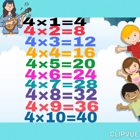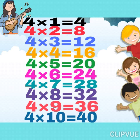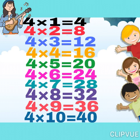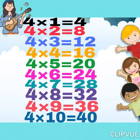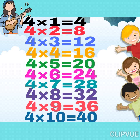Four sixes are twenty-four. Four sevens are twenty-eight. Four eights are thirty-two. Four nines are thirty-six. Four tens are forty.